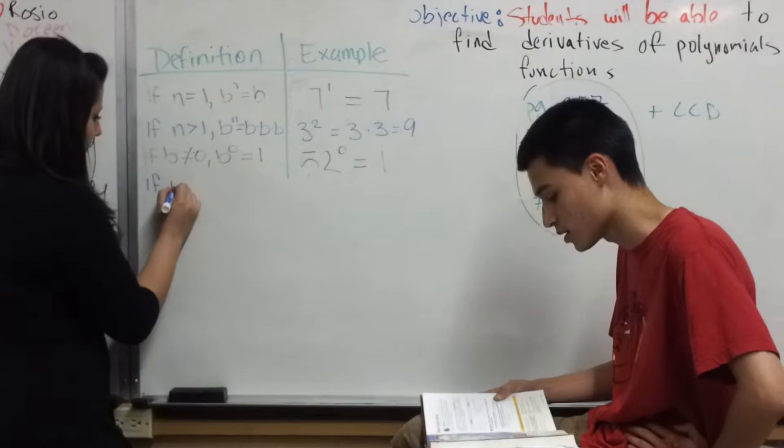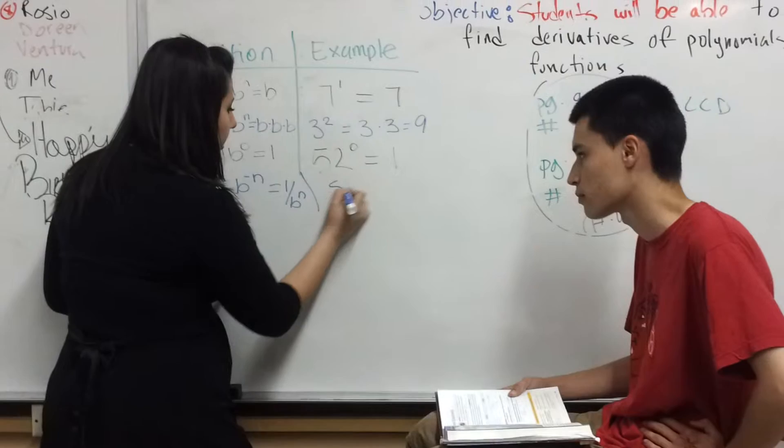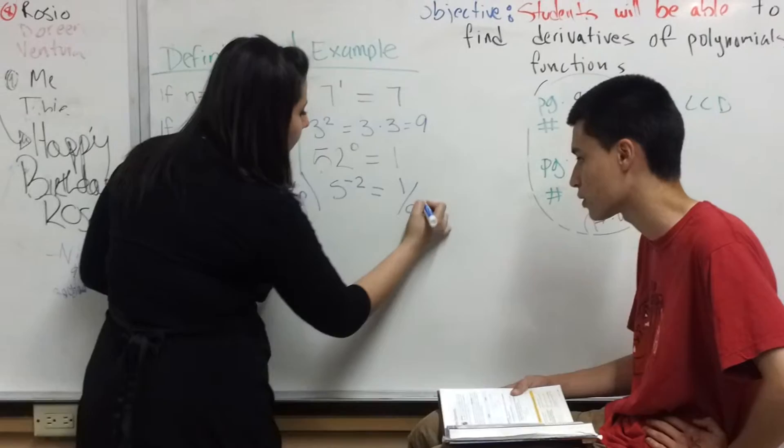if b cannot equal 0, then b to the negative n equals 1 over b^n. So 5 to the negative 2 equals 1 over 5 squared, which equals 1 over 25.